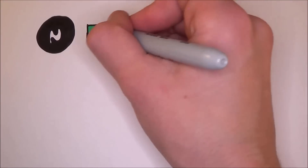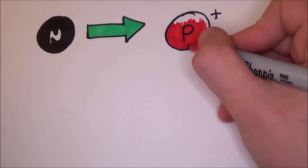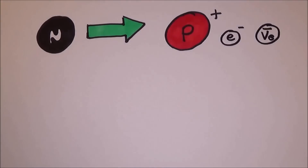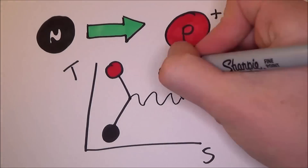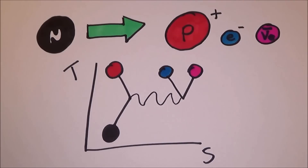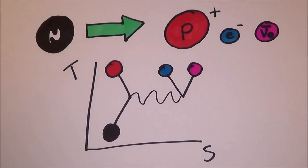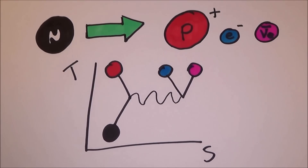Interestingly, this can go the other way around. A neutron comes in, then splits into a proton and a W-minus boson, which will then decay into an electron and an anti-neutrino.